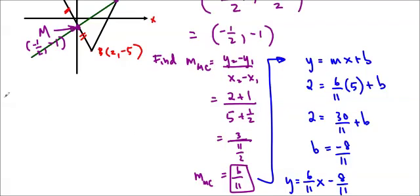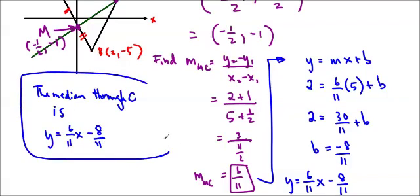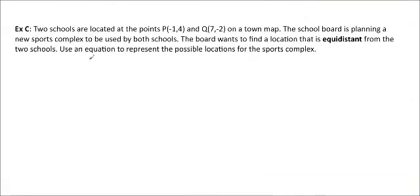So that is our equation. So we're going to write the answer here. The median through C is Y equals 6/11X minus 8/11. Hooray! Okay, so let's do one more.